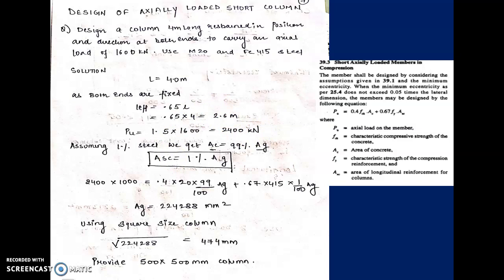In designing the column we assume some percentage of steel. We are assuming 1% because according to the code, the minimum steel is 0.8% and maximum is 4% or 6%. We generally avoid 6% due to congestion and avoid 4% due to difficulties in tying bars. Practically we restrict to 2.5%; theoretically the code allows up to 4%. Since 0.8% is the minimum, we start by assuming 1%.